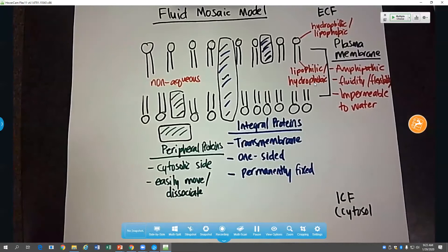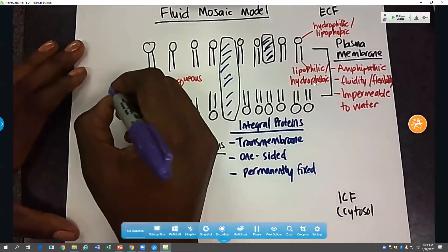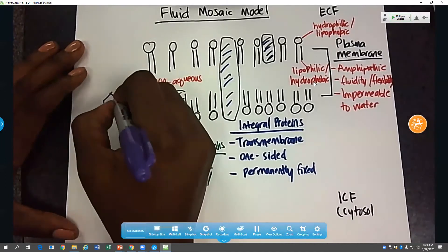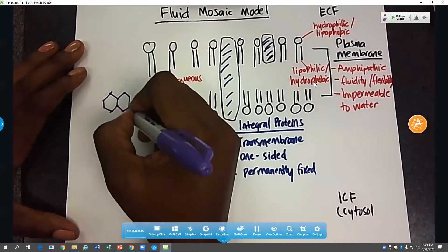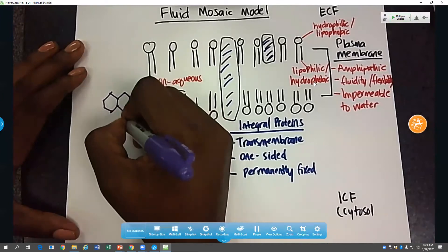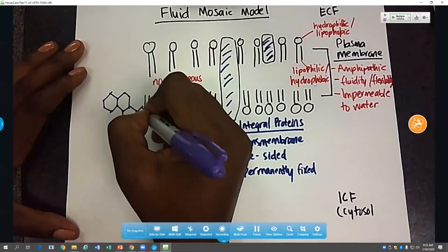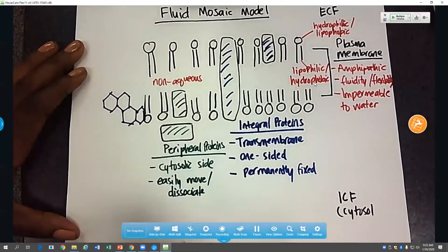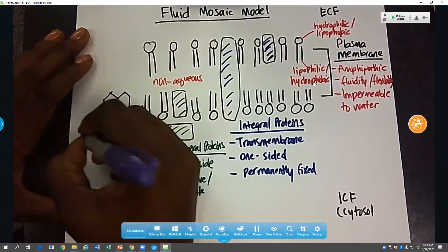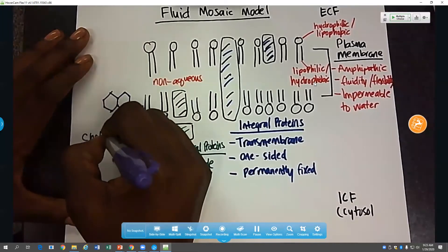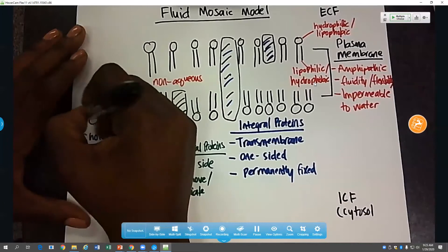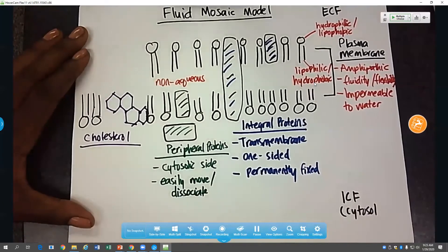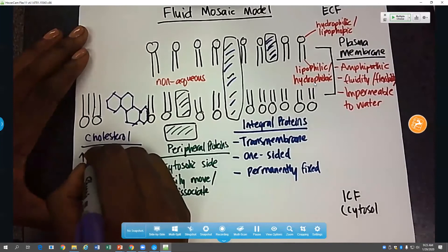The next structure we encounter in the cell membrane is cholesterol. Now cholesterol are these ring-like structures that are located throughout the membrane. They're really important for giving the membrane flexibility and fluidity as well. And they help to break up the rigid nature of the membranes. We've got cholesterol. And so they increase fluidity.